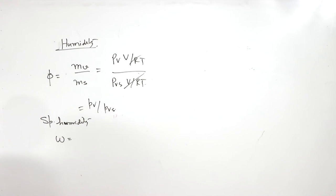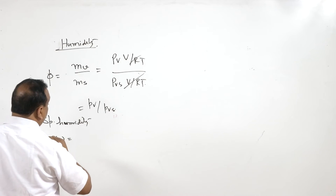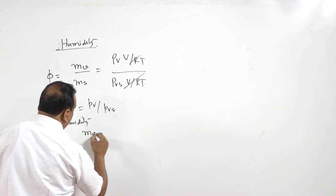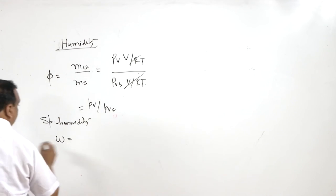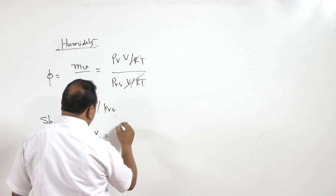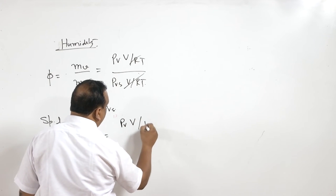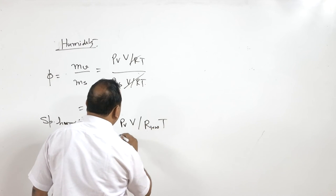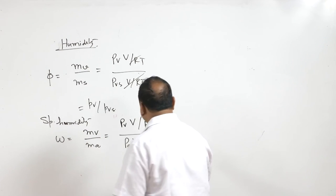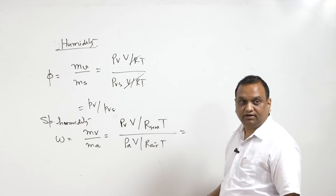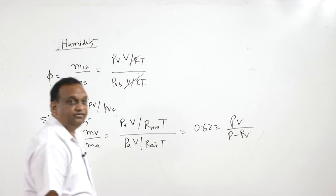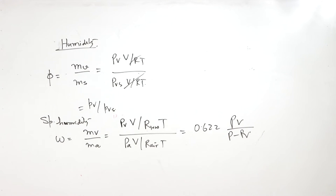Specific humidity is the mass of water vapor divided by the mass of dry air plus vapor. Using gas constants for water vapor and air respectively, this works out to: specific humidity = 0.622 · PV / (P − PV), where P is the total pressure and PV is the partial pressure of water vapor, assuming the air sample consists only of vapor and dry air.